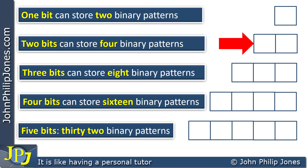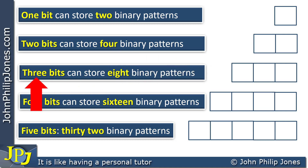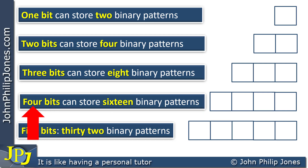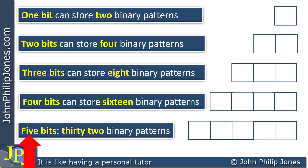If we add another storage area, so we have two flip-flops — in other words two bits — we found that this would give us four binary patterns. If we go to three, it means we could have three bits, giving us eight binary patterns. Adding another storage area gives us four flip-flops, meaning we can store four bits, and there are then a possibility of 16 binary patterns. If we have enough room to store five bits, then we will have 32 binary patterns possible.